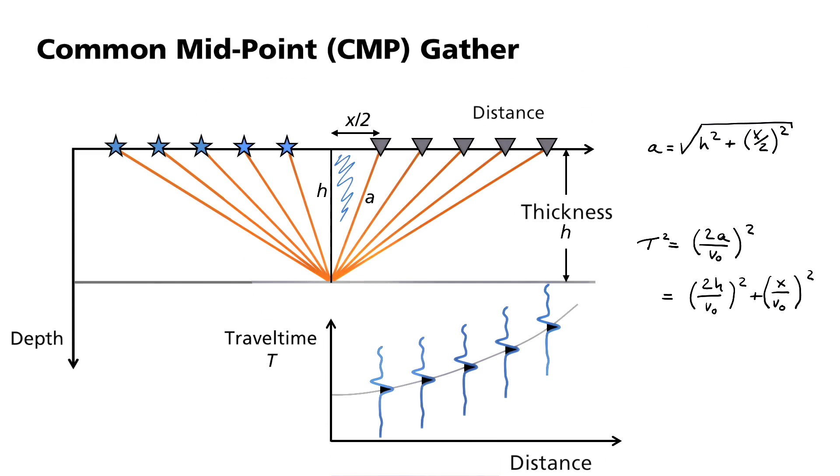The first term corresponds to the square of t0. This is the travel time of the perpendicular ray standing vertically on the reflector. In this simple case, it propagates vertically.